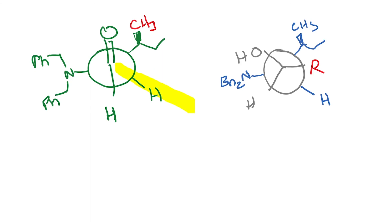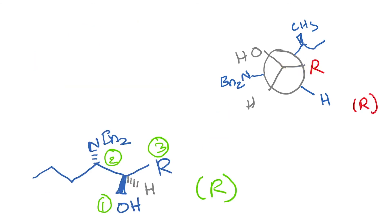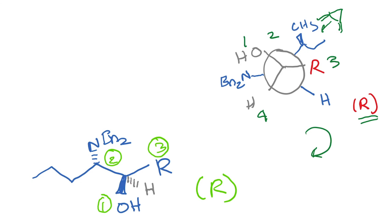Among the two conformations, the one with the trajectory drawn in yellow here is the most favored. We predict that attack would happen from here — this is the most reactive conformation. The nucleophile is R minus, and when R minus attacks here, the OH ends up going here and the hydrogen ends up going here, forming the carbon-R bond. Assigning the absolute stereochemistry: nitrogen gets priority number 1, the carbon behind gets priority number 2, R gets priority number 3, and hydrogen is number 4. Looking from the side with hydrogen far away, 1-2-3 is clockwise, so it is R. Redrawing the structure given to us, the stereochemistry assigned is also R. Therefore, the model we have proposed is actually working.